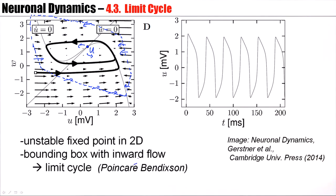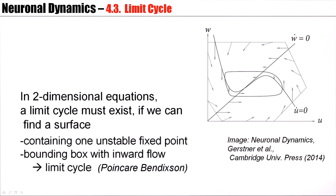It works in 2D. If you find a surrounding surface such that it contains one unstable fixed point, no other fixed points, and a bounding box with inward flow, then you're bound to have a limit cycle.